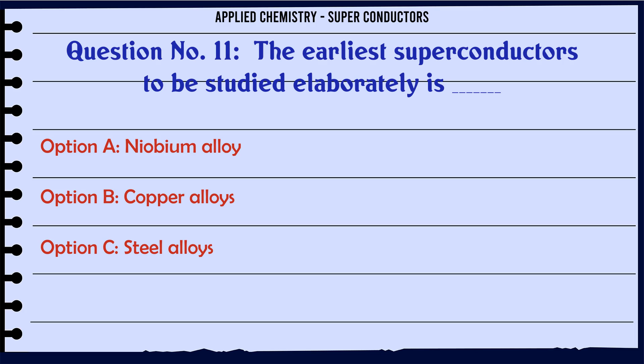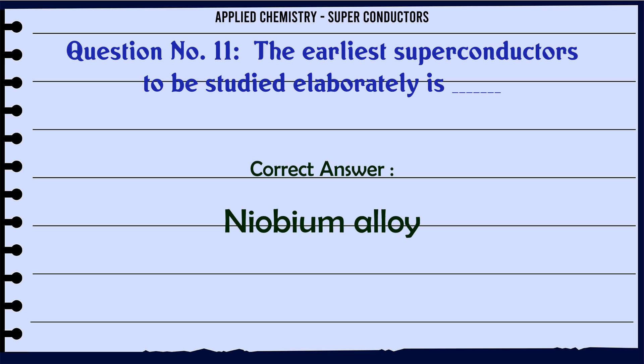The earliest superconductors to be studied elaborately is: A niobium alloy, B copper alloys, C steel alloys, D iron alloy. The correct answer is niobium alloy.